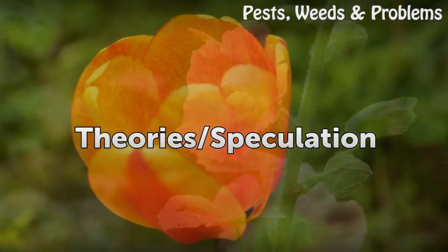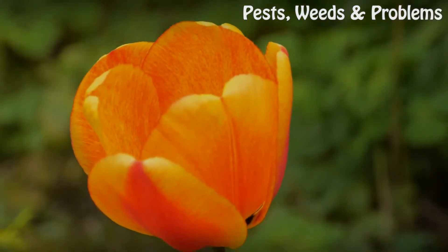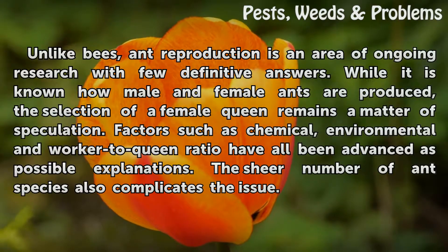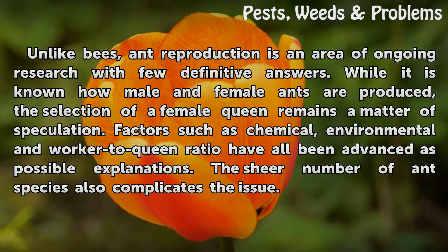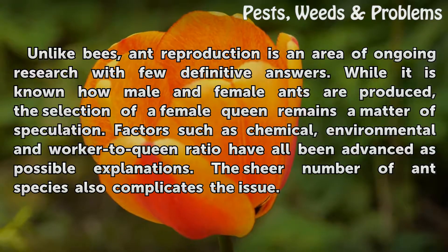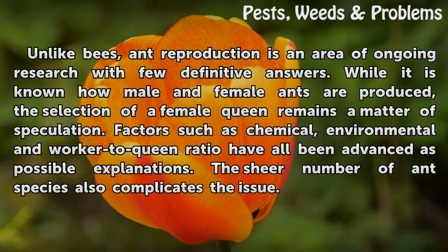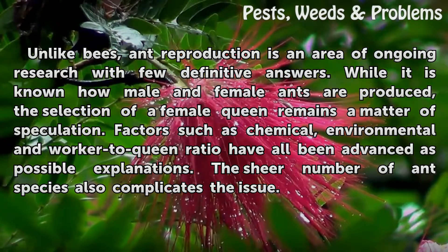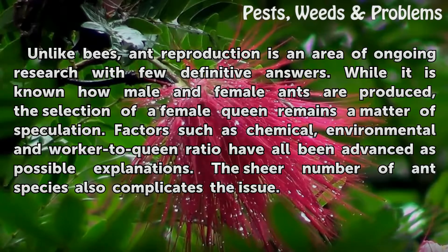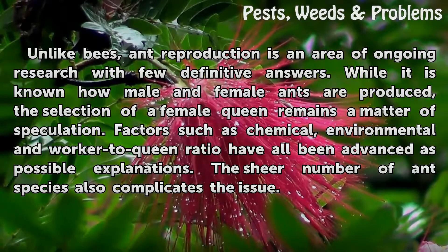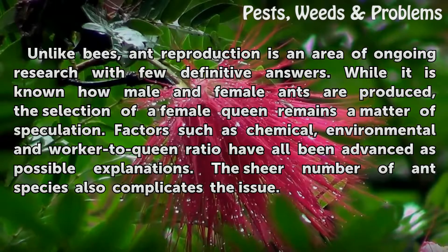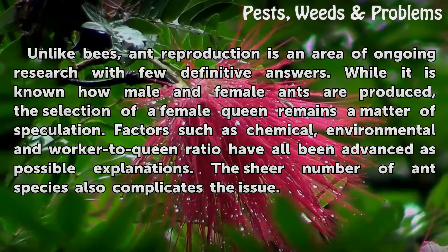Theories and speculation. Unlike bees, ant reproduction is an area of ongoing research with few definitive answers. While it is known how male and female ants are produced, the selection of a female queen remains a matter of speculation. Factors such as chemical, environmental, and worker-to-queen ratio have all been advanced as possible explanations. The sheer number of ant species also complicates the issue.